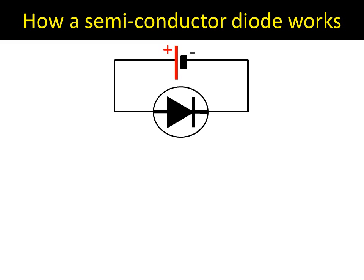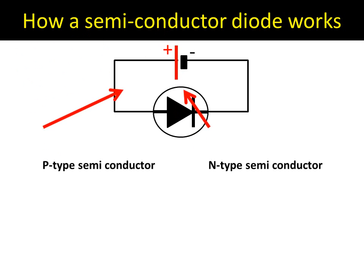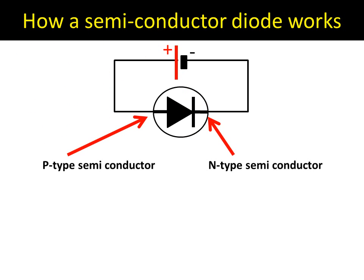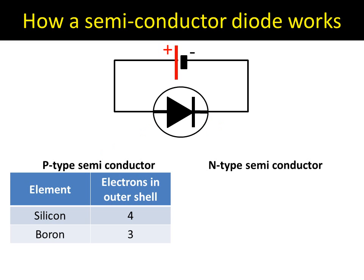It has to be laid out as shown in the diagram, and it has two sides: a left-hand side and a right-hand side. The left-hand side, the one closest to the positive, is called the p-type semiconductor, and the one closest to the negative is called the n-type semiconductor.